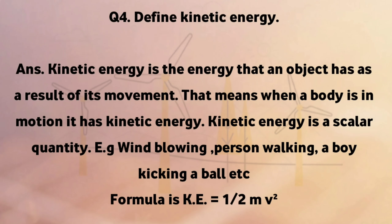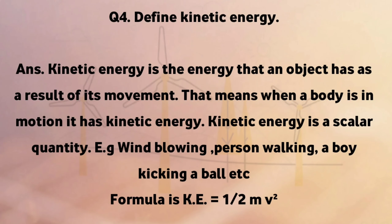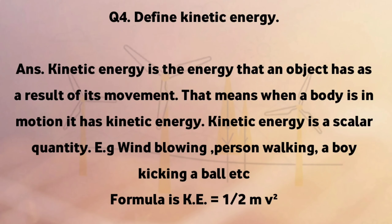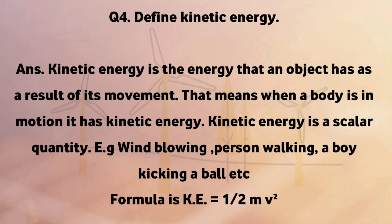Define kinetic energy. Kinetic energy is the energy that an object has as a result of its movement. When a body is in motion, it has kinetic energy. Kinetic energy is a scalar quantity. Examples include wind blowing, a person walking, and a boy kicking a ball.